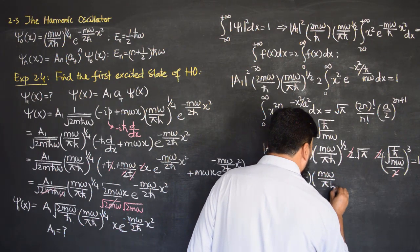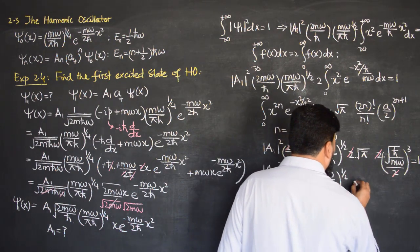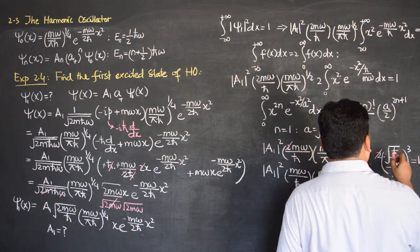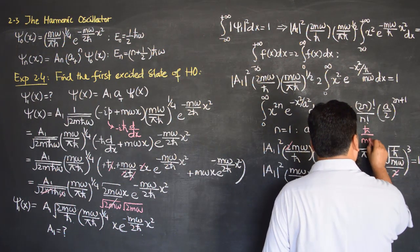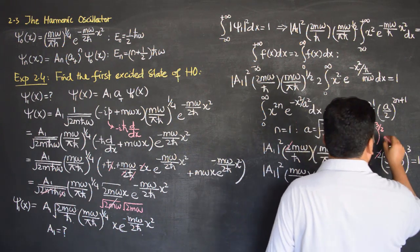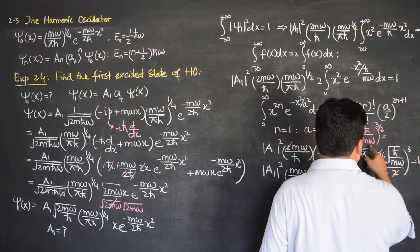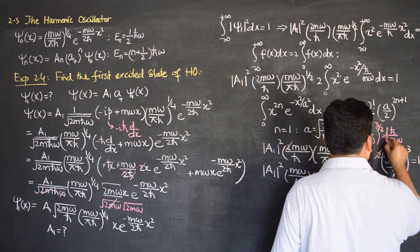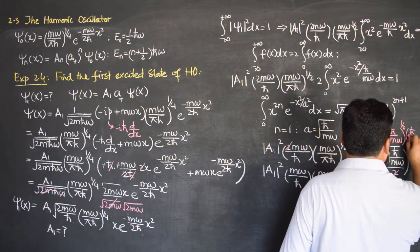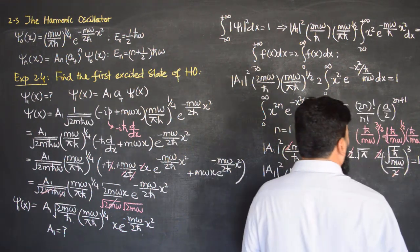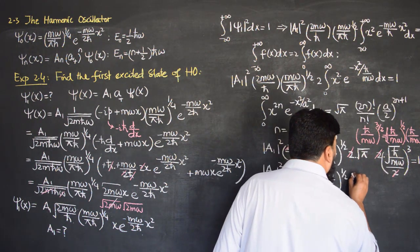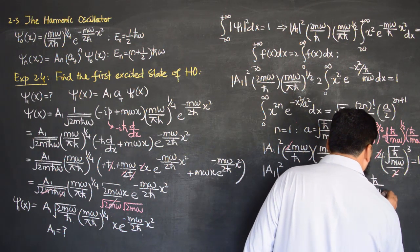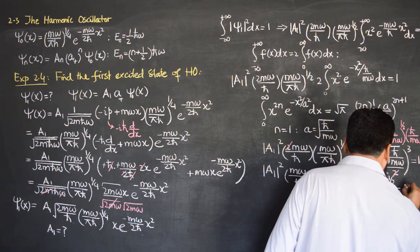Starting with ω/πℏ to the 1/2 power, I can simplify this as ℏ/mω to the 3/2 power. I can write this as ℏ/mω times ℏω, so (ℏ/mω)^(1/2) times (ℏ/mω)^1 gives the 3/2 exponent. Writing it out: ℏ/mω times (ℏ/mω)^(1/2) — and this all is equal to 1.